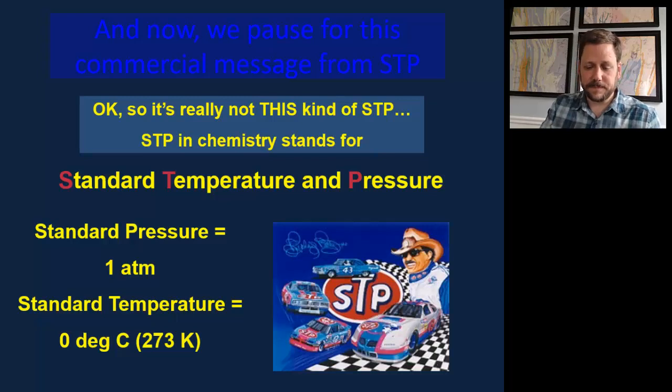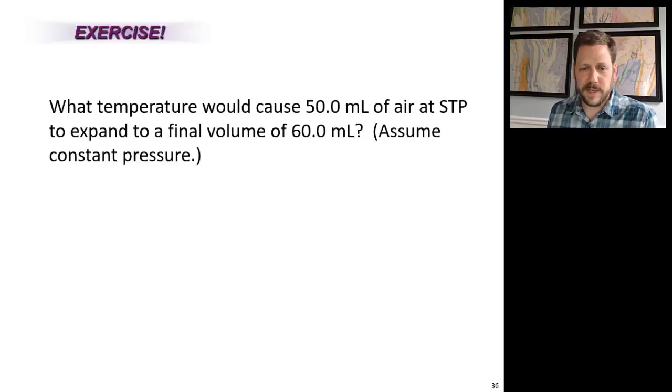Let's try one more practice problem. In this practice problem, it asks, what temperature would cause 50 mils of air at STP to expand to a final volume of 60 mils? Well, let's see. If we're talking about an increase in volume, then that would be caused by an increase in temperature. That's not a big increase in volume, but that allows us to make a prediction as to what increase in temperature might correspond to that. We're going to assume constant pressure and, of course, a constant number of moles. So see if you can set up this problem, pause the video, do the calculation, and see if you agree with the answer that I'm about to show.